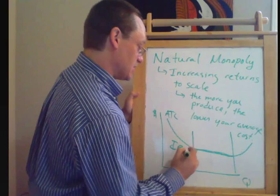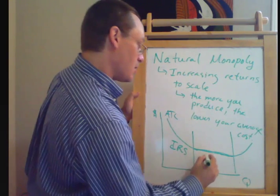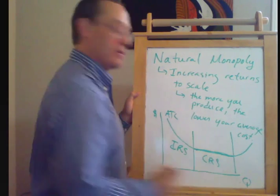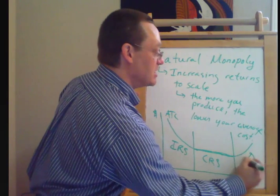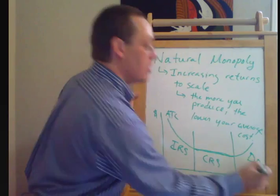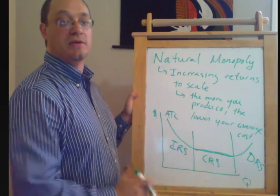So increasing returns to scale over here, constant returns to scale in this middle region where the cost curve is flat, and decreasing returns to scale over here where the cost curve is upward sloping.